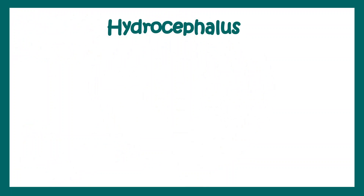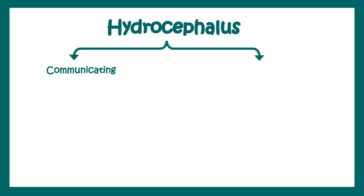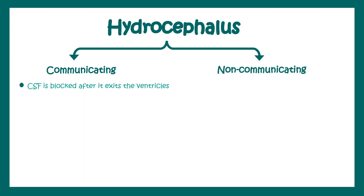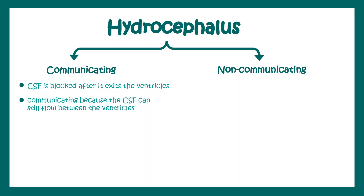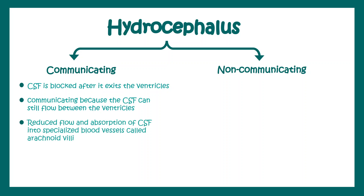Hydrocephalus can be classified into two forms: communicating hydrocephalus and non-communicating hydrocephalus. In communicating hydrocephalus, CSF is blocked after it exits the ventricle — most cases involve a reabsorption defect. It is called communicating because CSF can still flow between the ventricles; the defect is typically faulty reabsorption via the arachnoid villi.